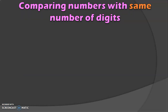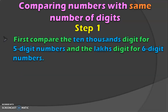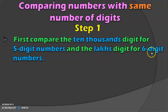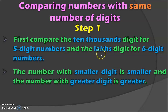Next, let us go on to comparing numbers with the same number of digits. In class 4, we are dealing with both 5 digit and 6 digit numbers. If it is a 5 digit number, you will start your comparison with the 10,000th place, because that is the highest place value for a 5 digit number. If it is a 6 digit number, you will start your comparison with the lakhs place. The number with the smaller digit is smaller and the number with the greater digit is greater.